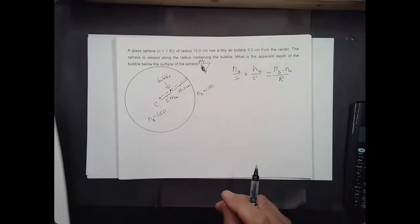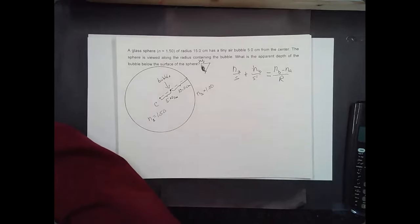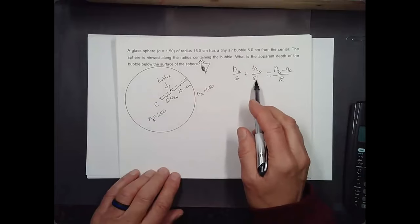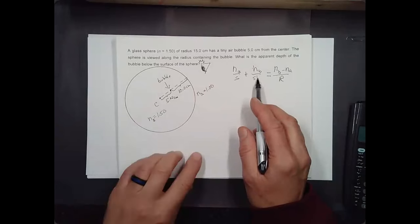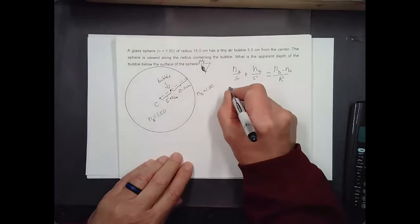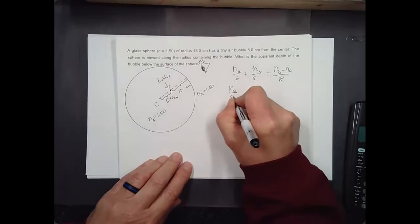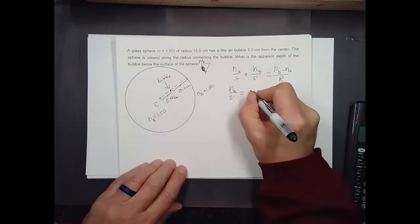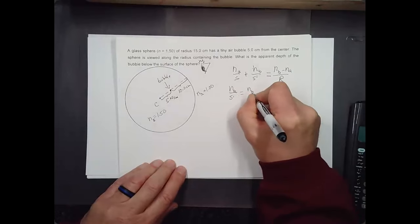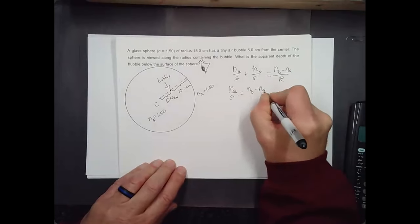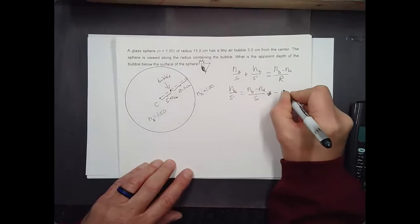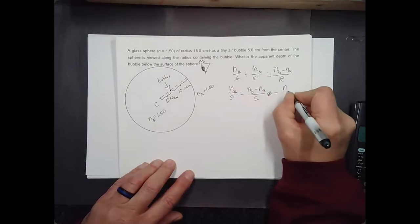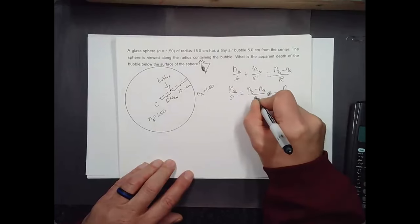I can take all the numbers and apply them to this formula. We're interested in where S prime is going to be. Solving: N_B over S prime equals N_B minus N_A over R minus N_A over S. So N_B is 1.00 over S prime. N_B minus N_A is 1.00 minus 1.50. Plug in R — the magnitude is 15 centimeters, but the center of curvature is in front, so it's minus 15.0 centimeters. And then minus N_A over S, which is minus 1.50 over S equals 10.0 centimeters.